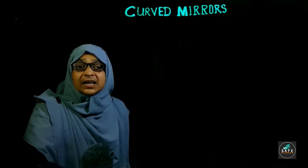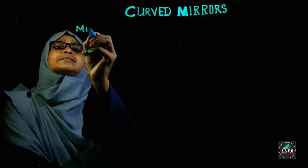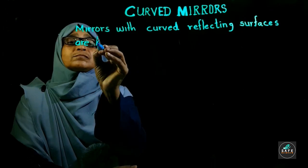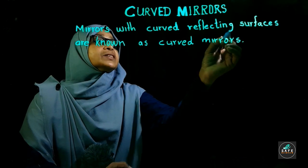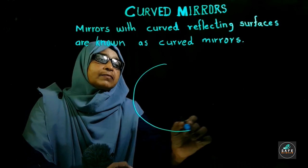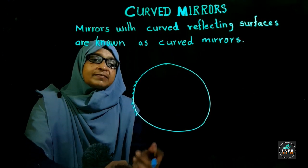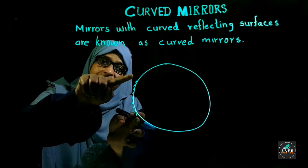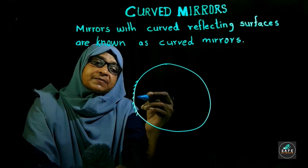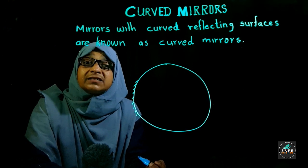Mirrors with curved reflecting surfaces are called curved mirrors. These curved surfaces are part of a sphere. In this mirror, the reflecting surface is inward, so this is a concave mirror.